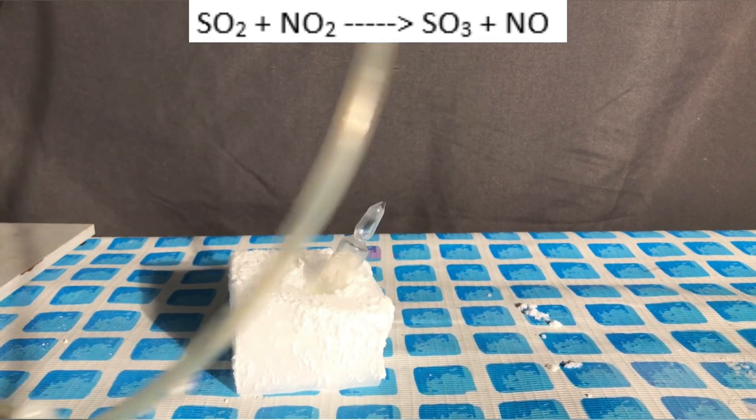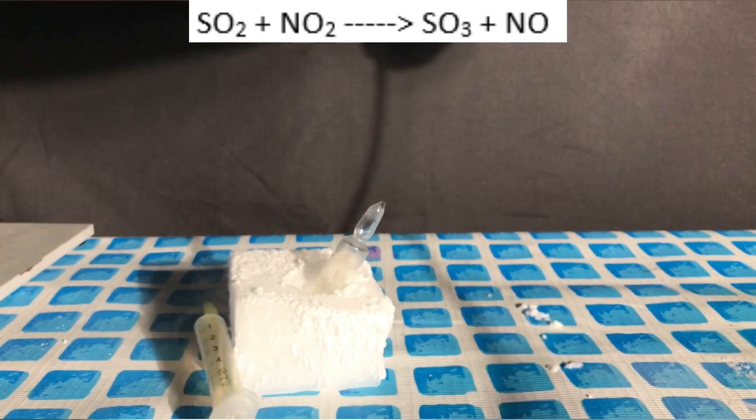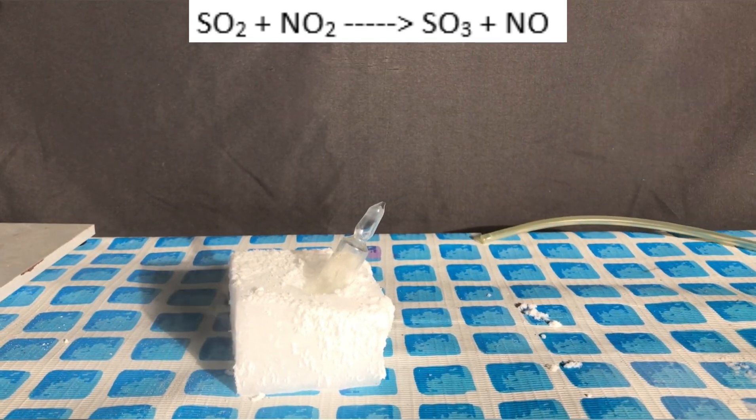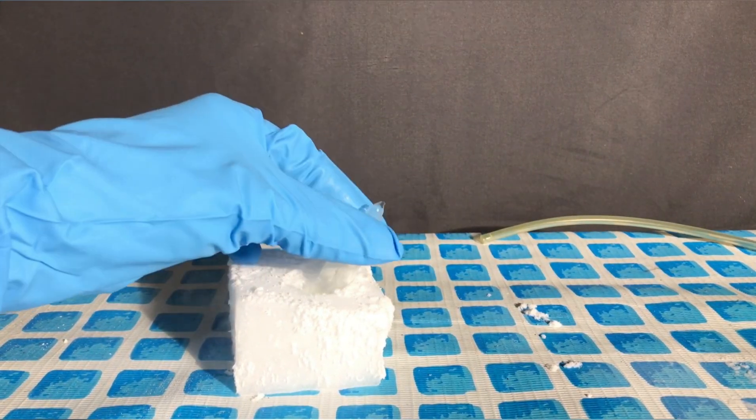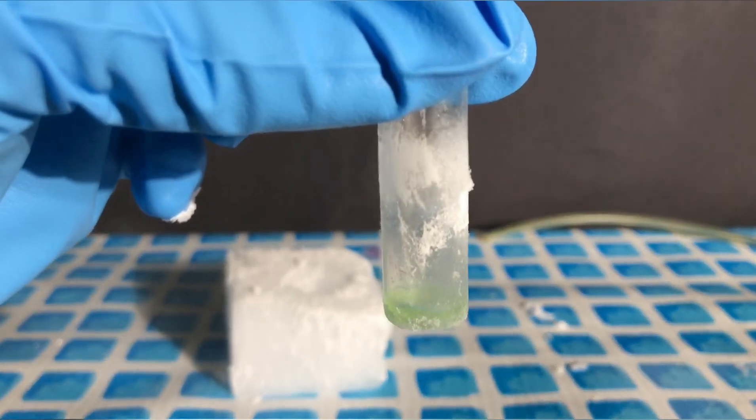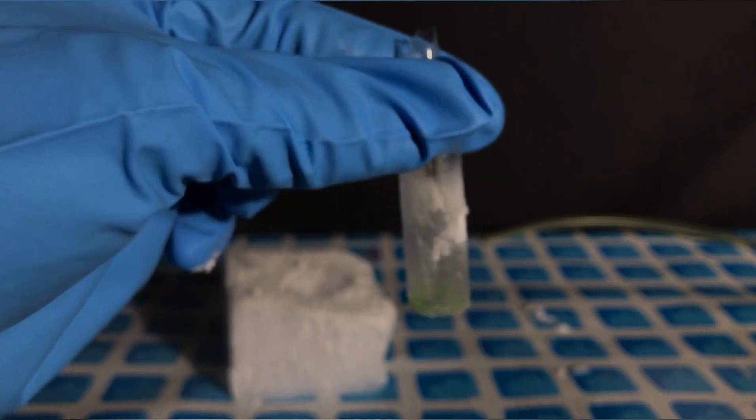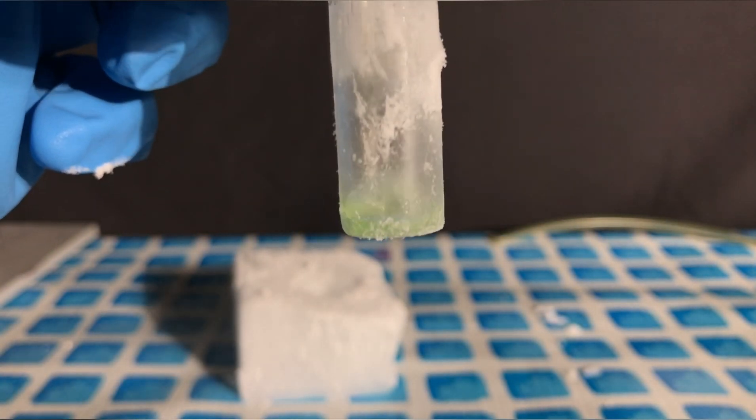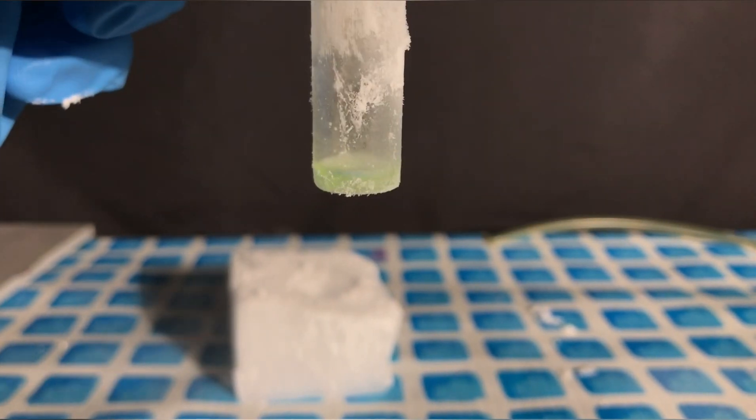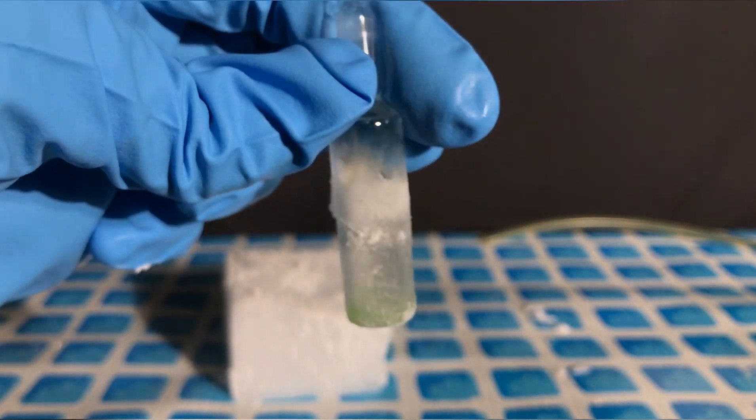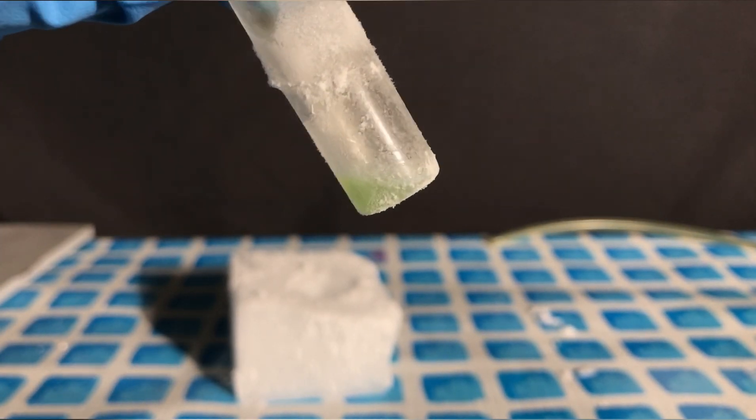The sulfur dioxide flow was stopped, and we took a closer look at the ampoule. I guess the slightly green color of this stuff could actually be an indicator that it worked. It didn't work well, because you obviously can't see any sulfur trioxide fumes, but because of the green color, we can see that some nitrogen monoxide was produced.